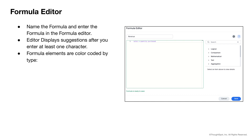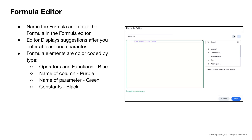Elements that make up the formula are also color-coded. For example, operators and functions are color-coded blue while the name of a column is color-coded purple, etc. To help you with the syntax of the formulas, select a formula type and then a function.